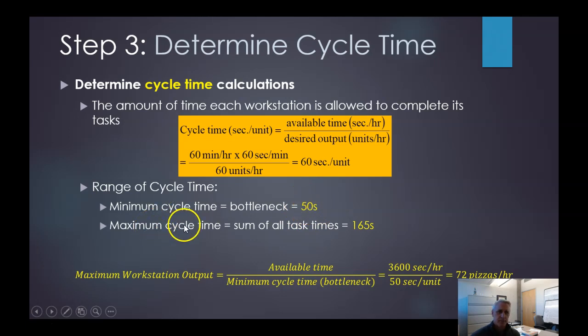Our maximum cycle time is the sum that we had. So that's our, think of this as our lower bound boundary and our upper boundary. The 165 is the sum of all the tasks. So the fastest we could possibly do anything is purely based on this bottleneck. Unless we change that bottleneck and can roll dough faster than 50 seconds, which we haven't proposed yet, but that's exactly where we would look to do something like that. We're not going to make anything faster than that 50 seconds.